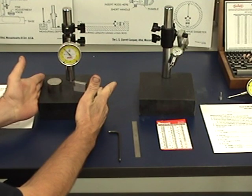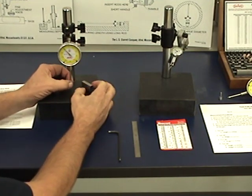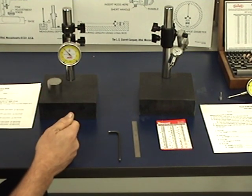So we have our granite plate, we have our dial indicator, and we want to make sure the tip is tight. Always make sure the tip is tight.